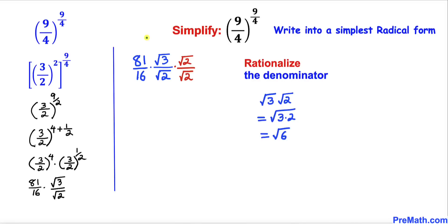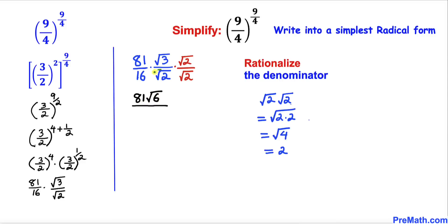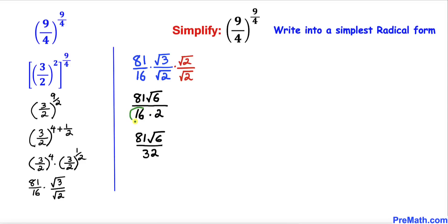So we are going to rationalize the denominator by multiplying and dividing by √2. On the numerator, √3 times √2 simplifies to √6. Therefore the numerator is 81√6. The denominator has √2 times √2, which equals 2, so the denominator becomes 16 times 2, which is 32.